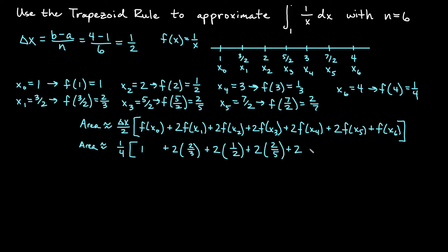Plus 2 times f of x₄, which was 1 third, plus 2 times f of x₅, which was 2 over 7, plus f of x₆, only one of those, which is a fourth.